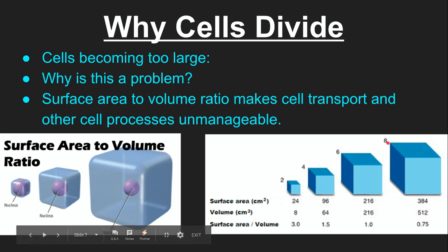If we go up just two more units on each side, now you see that the volume has outpaced the surface area by a pretty good amount. The reason this is a problem is the surface area represents the outside part of the cell. It represents the cell membrane.